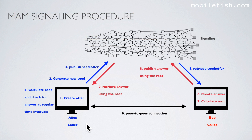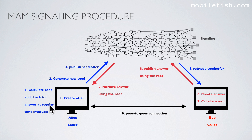Let me explain what has happened. Alice's browser creates an offer and also generates a new seed. The seed and offer are attached to each other, separated by a semicolon, and published to the Tangle. The link, root, and side key are shared with Bob, and Bob can retrieve the seed and offer from the Tangle. Using this seed, the root is calculated and at regular time intervals, the Tangle is checked if the answer is available. After this information is retrieved, the answer is created. With this seed, the root is calculated. The answer is published to the Tangle using the root. If the answer is available on the Tangle, it is retrieved using the root, and a direct peer-to-peer connection can be established between Alice and Bob.